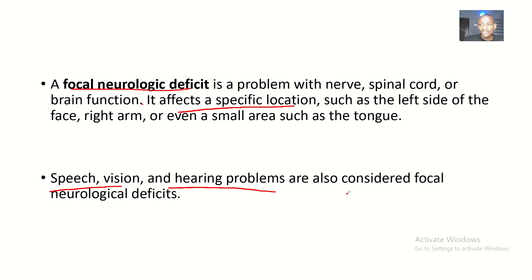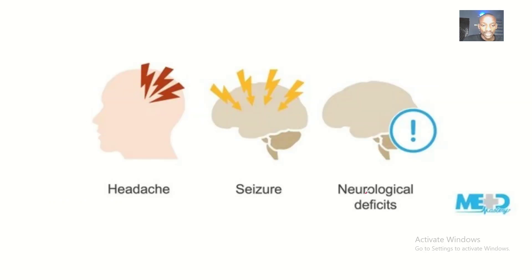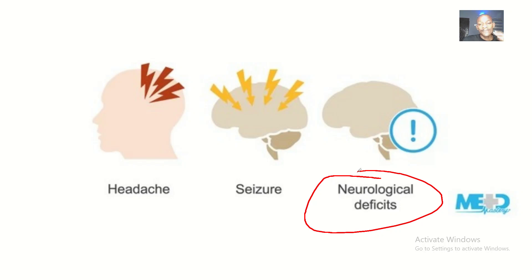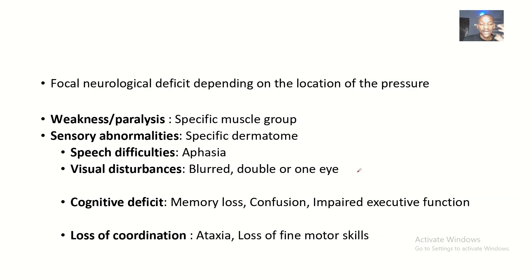For hearing problems, you are looking at the vestibulocochlear nerve. If there's anything wrong with the vestibulocochlear nerve, that constitutes a neurological deficit. These neurological deficits are localized to one particular part of the brain or nerves.